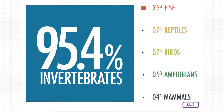Now that you know that a vertebrate is an animal with a backbone, what do you think an invertebrate is? That's correct — an invertebrate is an animal with no backbone. A little more than 95% of all animals on earth are invertebrates. Think about it — more than 95% of all the species of animals on earth are invertebrates. That's a lot, and most of them are fairly small. Fewer than 5% of all animal species are vertebrates. That means that you and I and all vertebrates belong to a very small percentage of all the animals on earth. Mammals — that includes all humans — are literally just a speck.